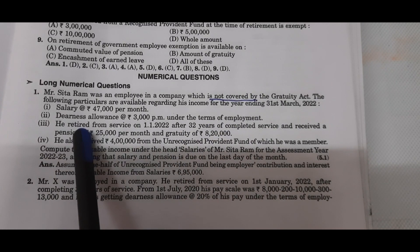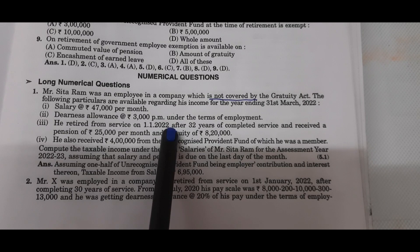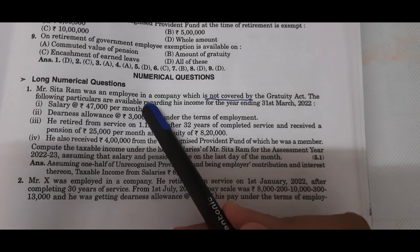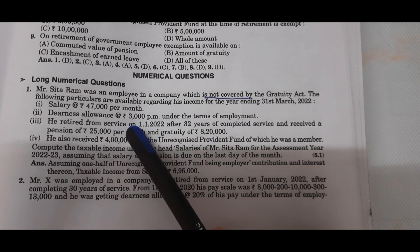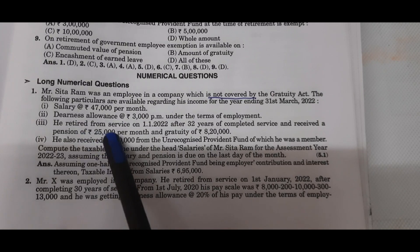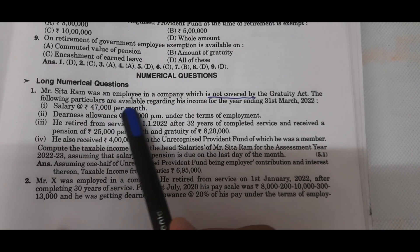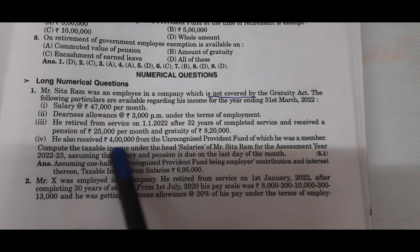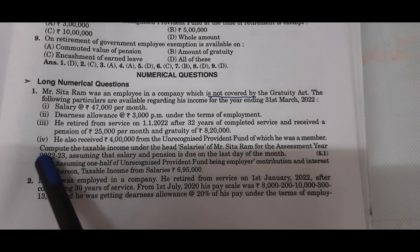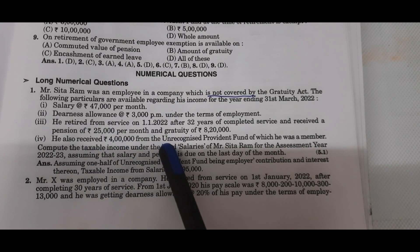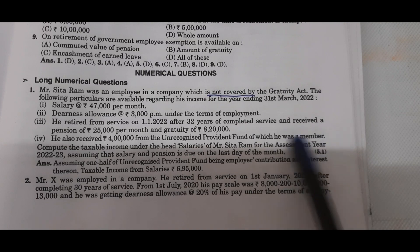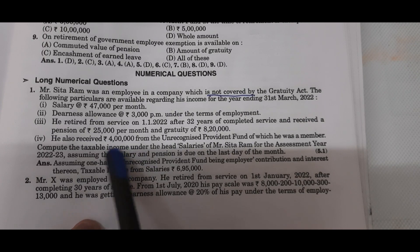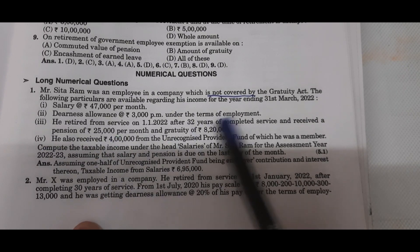He is retiring on 1st January 2022, so we must note that salary will be calculated for only 9 months. Because he retires on 1st January, January, February, March — pension will be received for those months. So 47,000 into 9 for salary, and only 3 months of pension. He also received 4 lakh from the unrecognized provident fund. At the time of retirement, from an unrecognized provident fund, we take 50%, so 2 lakh rupees becomes taxable.